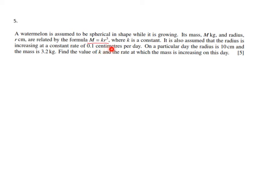It is also assumed that the radius is increasing at a constant rate of 0.1 centimeters per day. What does that mean? The rate of change of the radius with regards to time, dr/dt, is 0.1.